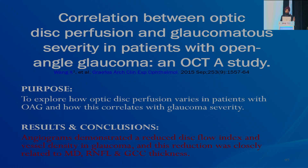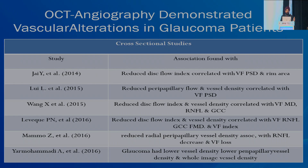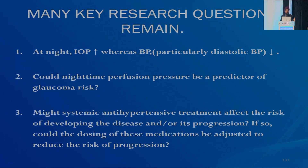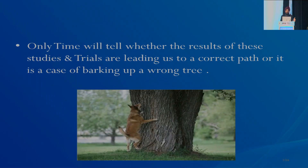Experimental studies using OCT-A have demonstrated reduced disc flow index and vessel density in glaucoma. Key research questions remain: could nighttime perfusion pressure be a predictor for glaucoma risk? Might systemic antihypertensive treatment affect the risk of developing disease and progression, and could the dosing of these medications be adjusted to reduce progression risk? Only time will tell whether the results of these landmark studies are leading us to the correct path or it is a case of barking up the wrong tree.